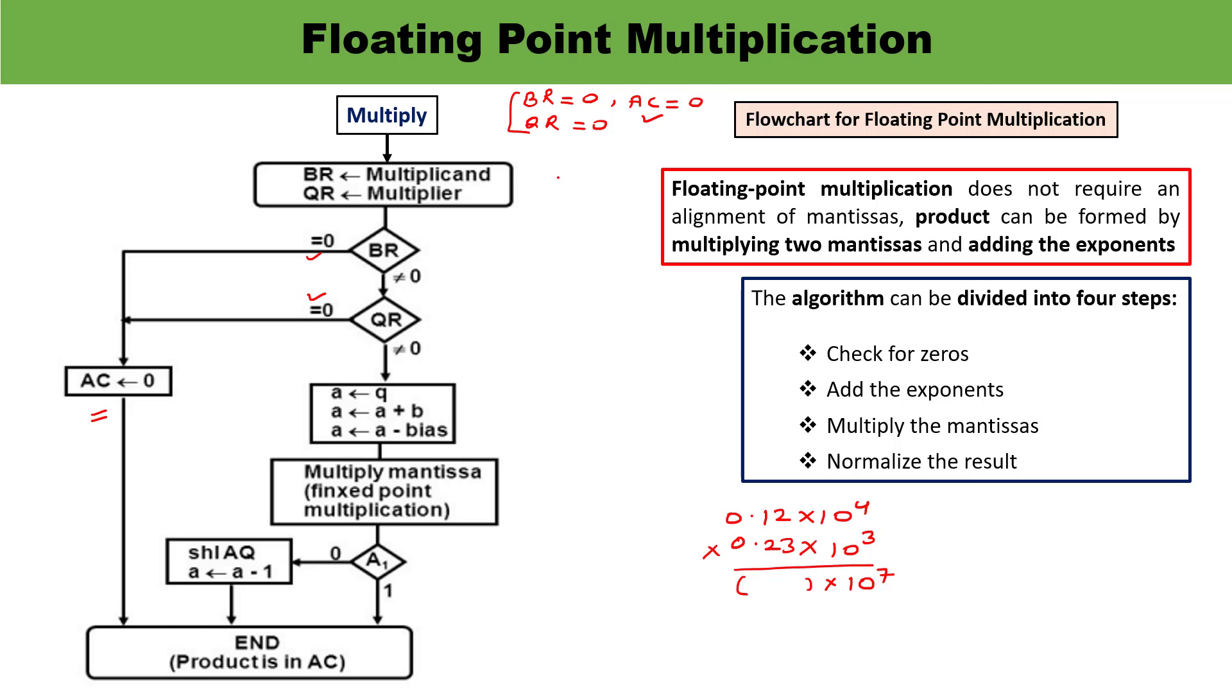For multiplication, both numbers must be non-zero. The number stored in BR must be non-zero, and the multiplier stored in QR must also be non-zero.